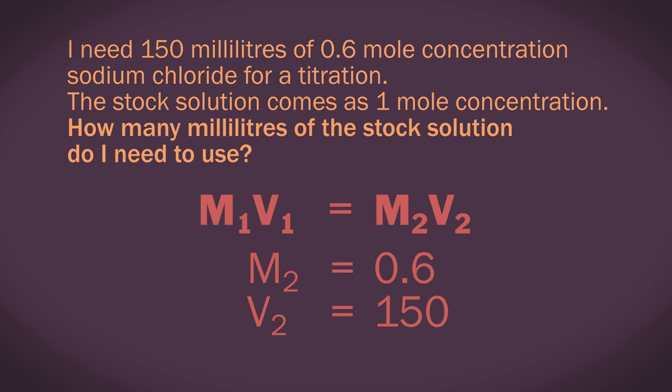Substituting in these values, we get 1 times V1 equals 0.6 times 150. So V1 equals 90 milliliters. That wasn't too tricky, was it? I told you it was a nice and easy equation.